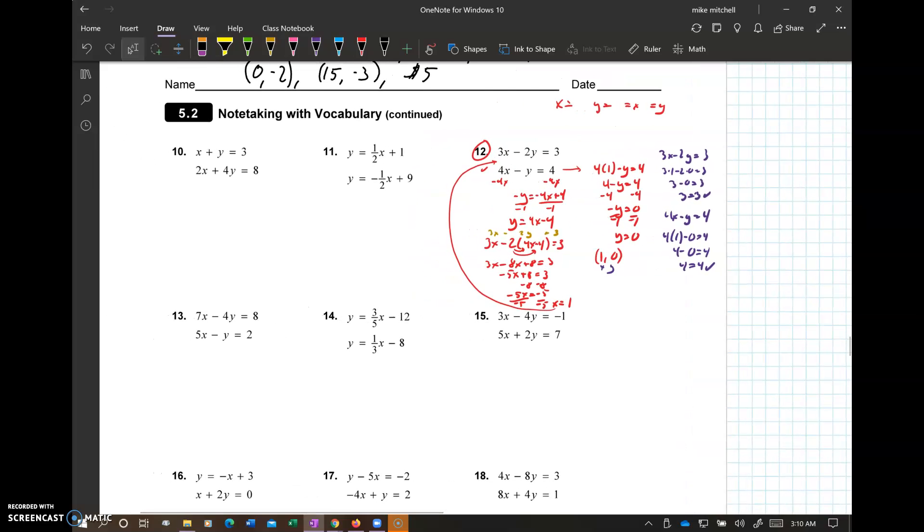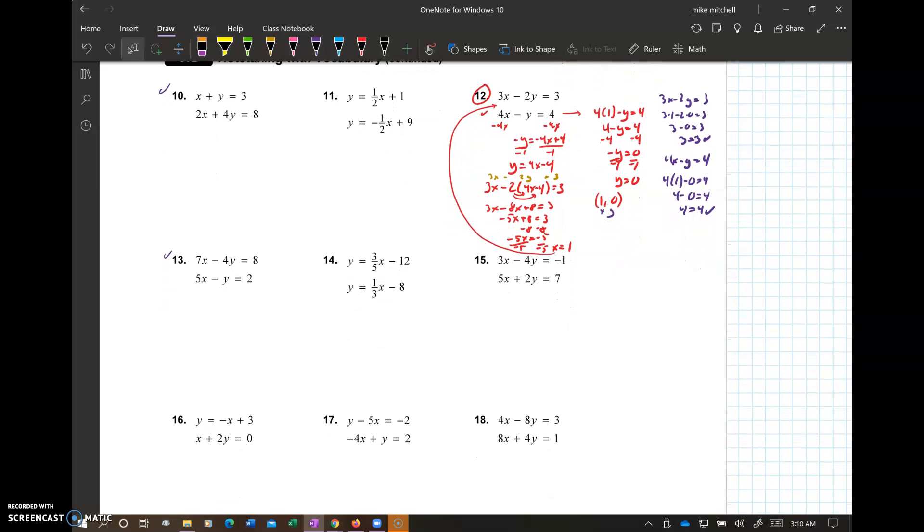So you're going to have to do something like that on number 10, number 13, number 17. 16, you've already got a y equals, so you're a little luckier there. Okay, let's do number 14. This is the same thing you're going to do on number 11 as I do with 14 here. Now, these are both equal to y. Both equal to y.